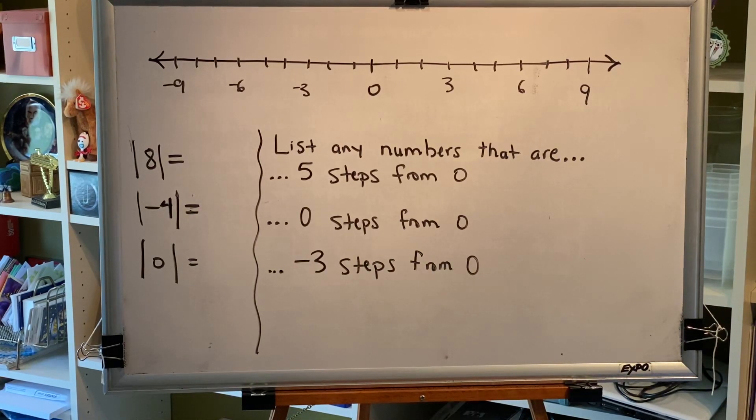The topic of this video is introduction to absolute value. Absolute value means distance from zero on a number line, and because a distance can never be negative, taking the absolute value of a number can only produce a zero or positive result.